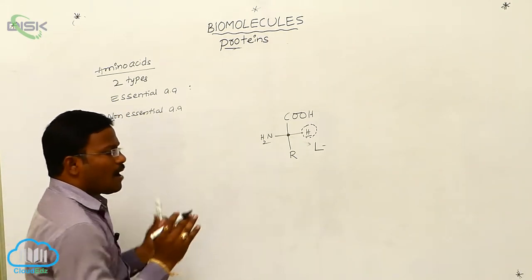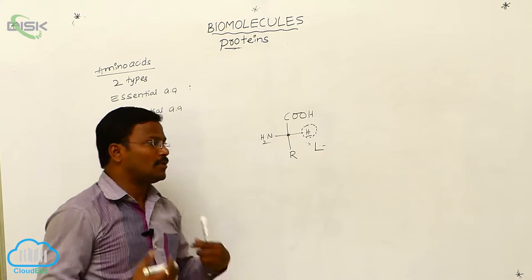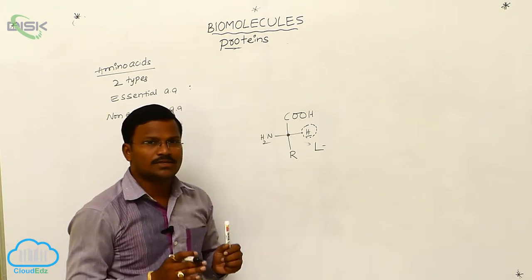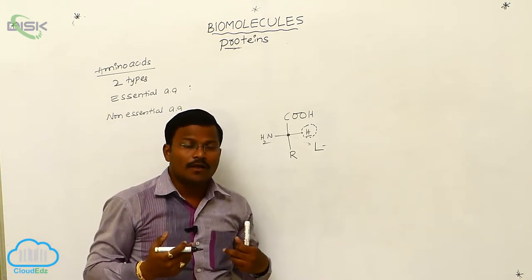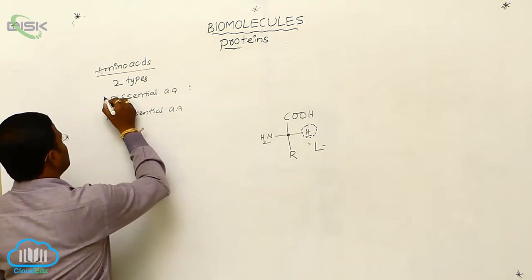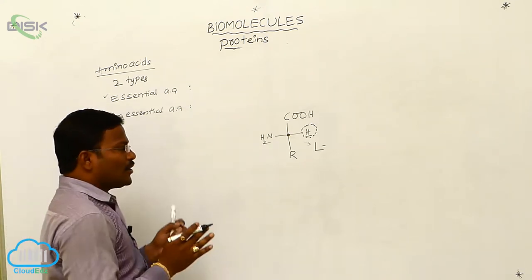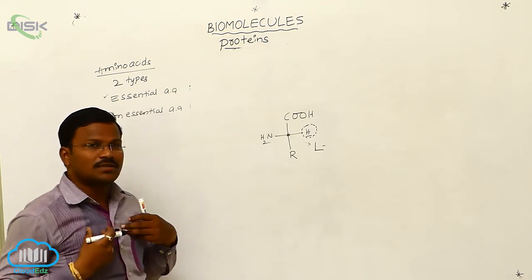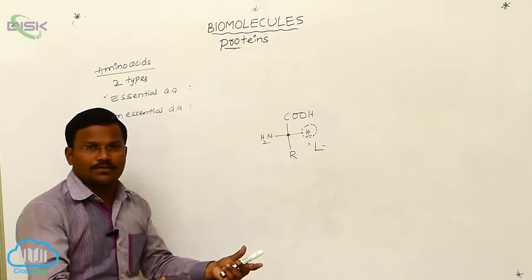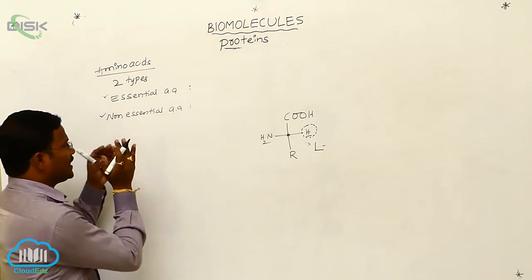Not all 20 types of amino acids are biosynthesized inside the animal body. Some amino acids that are never biosynthesized in the living organism body — especially the animal body — we have to take from outside the body through diet. Such amino acids are called essential amino acids. Whereas some amino acids out of the 20 are biosynthesized in our body, so we need not take them through diet. Such amino acids are called non-essential amino acids.